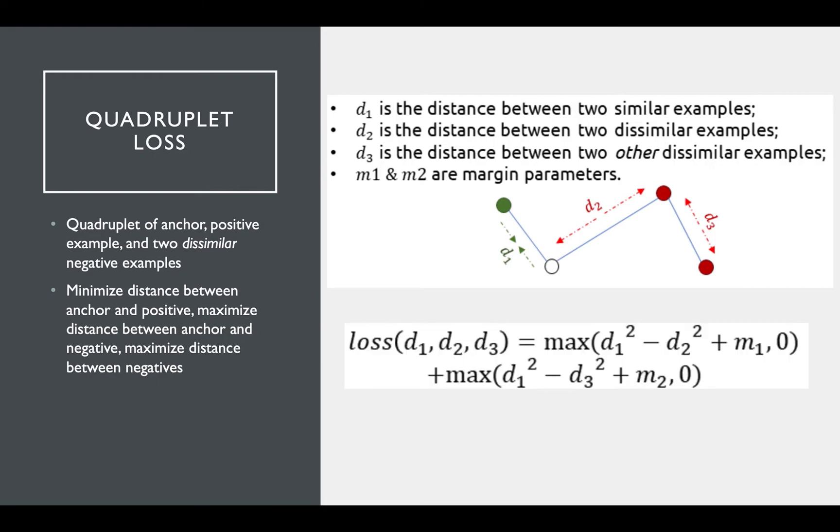From the formula, we see that the first term is the same triplet loss we just learned using the anchor and the first negative example. Now we add an additional triplet loss term. The only difference here is that the distance between the anchor and the negative term gets replaced with the distance between the two negative inputs.